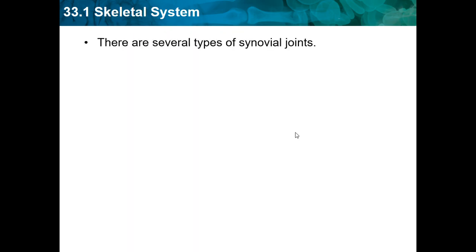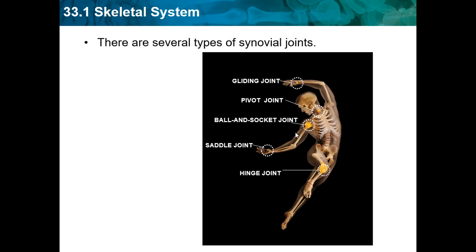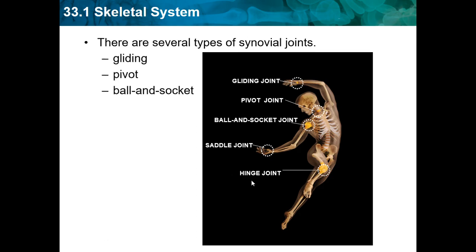There are several types of synovial joints: a gliding joint, a pivot joint, a ball and socket joint, a saddle joint, and a hinge joint.